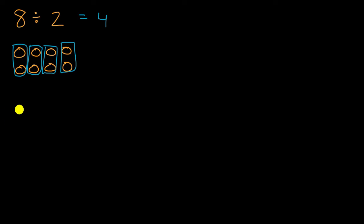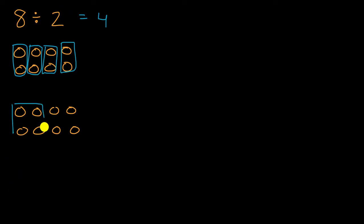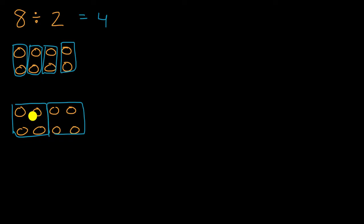Another way we could have thought about that is: you have one, two, three, four, five, six, seven, eight. And if you were to divide it into two equal groups, you could have one group of four and then a second group of four — so two equal groups. How many in each of those equal groups? There are four in each of those groups. And so once again, eight divided by two is equal to four. Now we're going to extend our knowledge of division by starting to think about things that don't divide evenly.